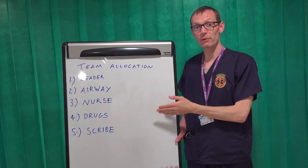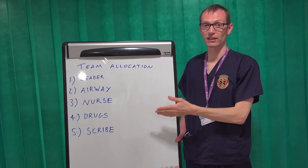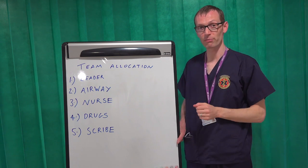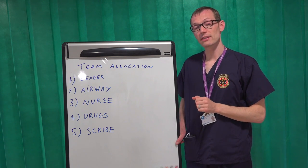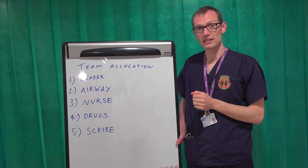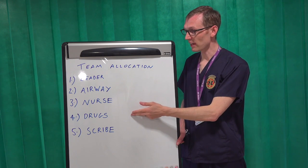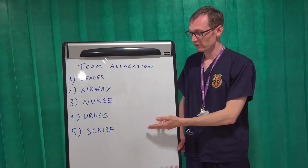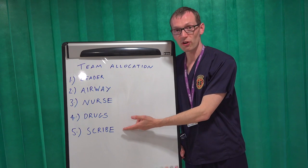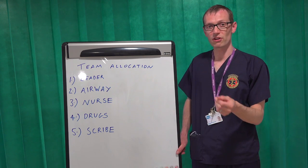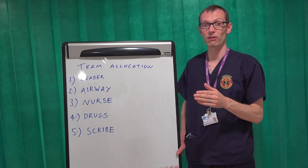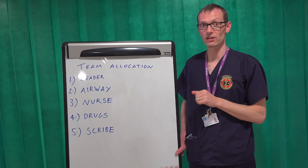Our fourth person will be in charge of administering drugs. They will usually be on the other side of the bed from the nurse, and will be under the guidance of the leader. We should also have a scribe to make sure we have an accurate timeline so this can be documented in the notes.